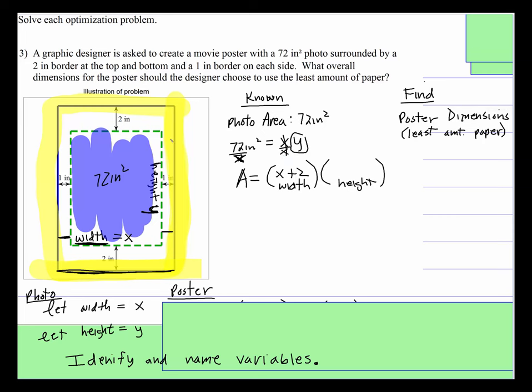So notice, if this height right here is 72 divided by x, but you also have to add this 2 inches and this 2 inches. So it's 72 divided by x. That's the height of the photo. But then for the poster, you have to add those additional 4 inches.